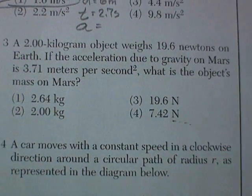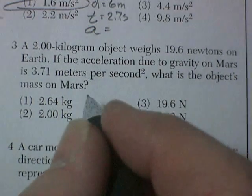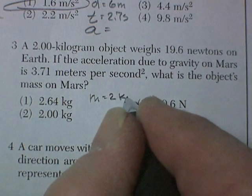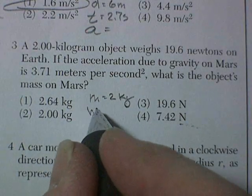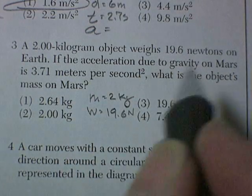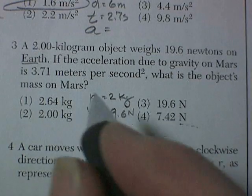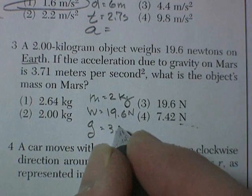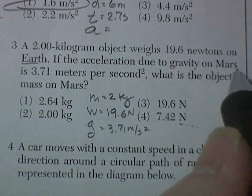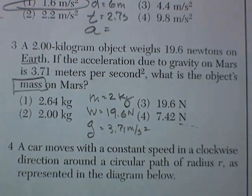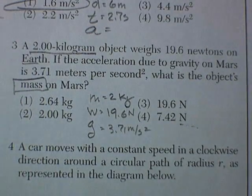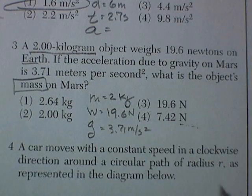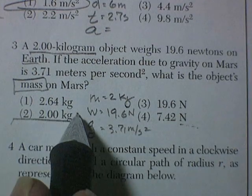Question 3: a 2-kilogram object — mass equals 2 kilograms. We're told it weighs 19.6 newtons on Earth, and the acceleration due to gravity on Mars is 3.71 m/s². What is the object's mass? This is a trick question — they already told you the mass. Mass doesn't change; if you go to Mars you have the same mass you had when you left. The correct answer is 2 kilograms.